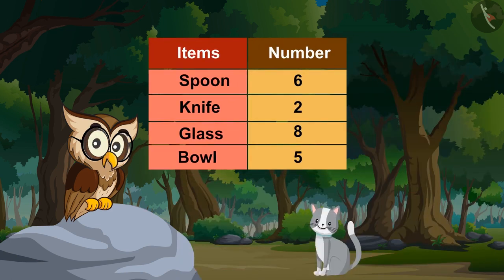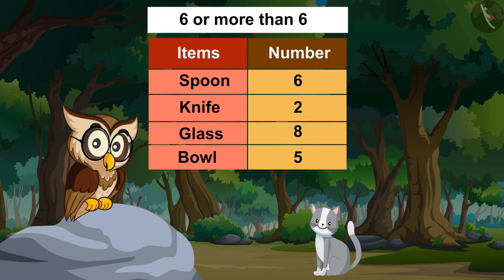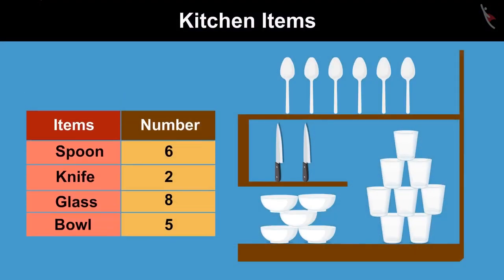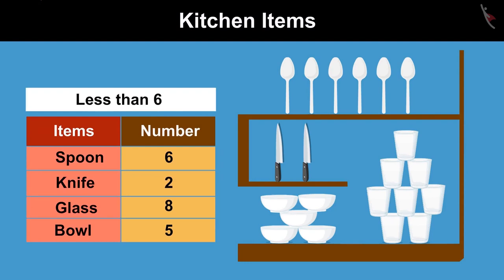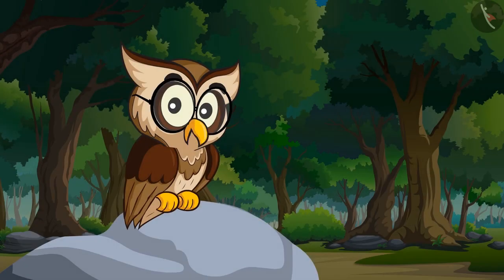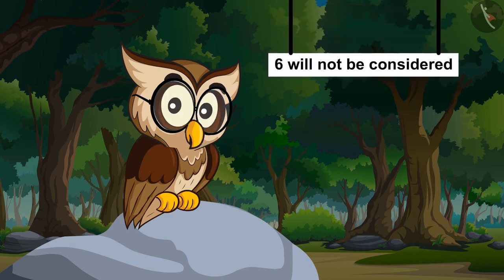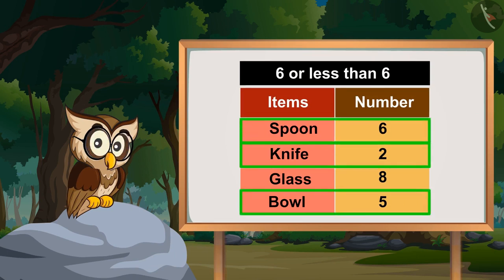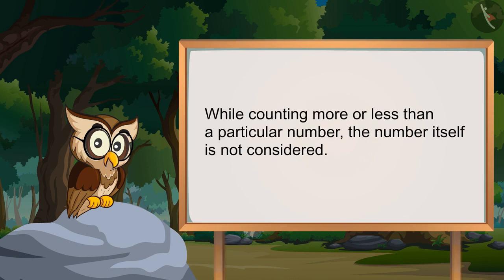But Saloni, if I would have asked which kitchen item is more than or equal to 6, then your answer would be correct. Oh, now I get it! So, now can you tell me which kitchen item is less than 6 in number? Knife and bowl. Absolutely right! While counting less than a particular number, the number itself is not considered. Similarly, if we look at the numbers of items which are either 6 or less than 6, we will get knife, bowl, and spoons. So your confusion must have been cleared — while counting more or less than a particular number, the number itself is not considered.